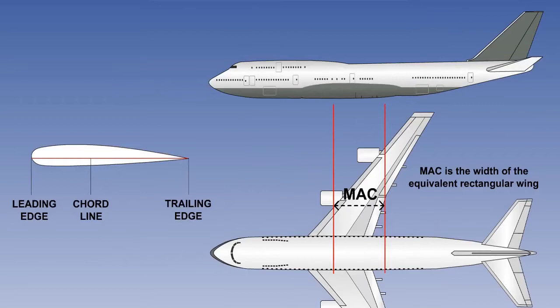Before we proceed with examples, the definition of a chord and Mean Aerodynamic Chord must be understood. The chord line is a straight line joining the leading and trailing edges of the wing. The Mean Aerodynamic Chord is the length of the chord of a rectangular wing, with the same area and having the same aerodynamic characteristics as the original wing.